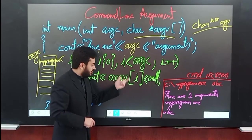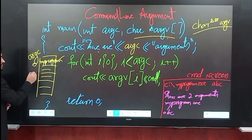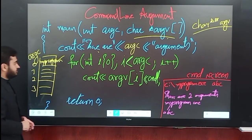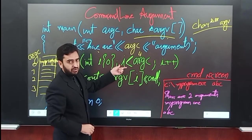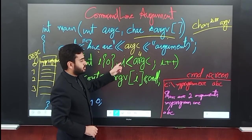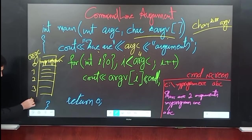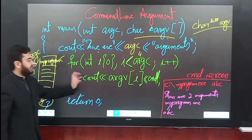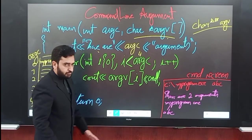We print each element of the array starting from index zero — printing the argument at index 0, then index 1, index 2, and index 3. If argc equals 4, the loop runs while i is less than 4, so the loop executes for i equal to 0, 1, 2, and 3. When i becomes equal to 4 there is no fourth index location, so the loop terminates correctly.